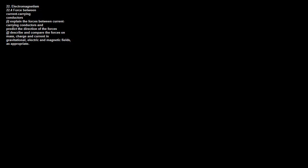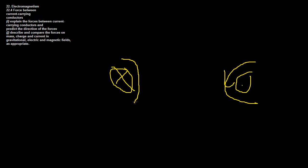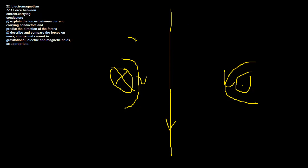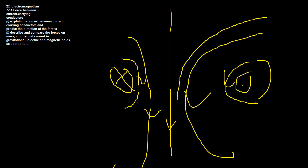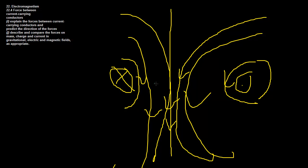Looking at oppositely moving currents — one going into the page and one coming out — the resulting magnetic fields go in opposite directions on each side. You get a field through the middle and lines going away on either side, repelling and cancelling each other out, so the wires move away from each other.